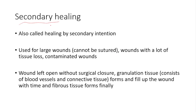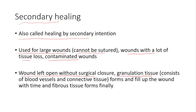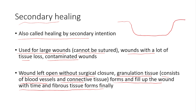Regarding secondary wound healing, it is also called healing by secondary intention. It is used for large wounds that cannot be sutured, wounds with a lot of soft tissue damage, or contaminated wounds. The wound is left open without surgical closure, and granulation tissue — which consists of blood vessels and connective tissue — forms and fills up the wound over time, and fibrous tissue forms finally. So if we have a wound with a lot of soft tissue loss, we can't approximate the edges, so we leave it to heal by secondary intention, filling up with granulation tissue until it heals eventually.